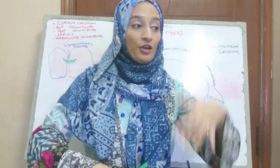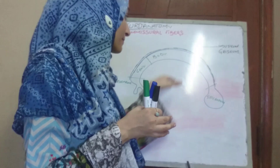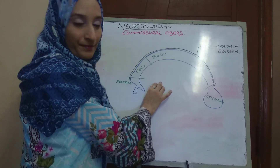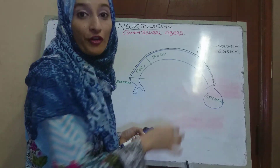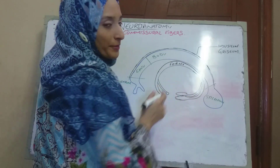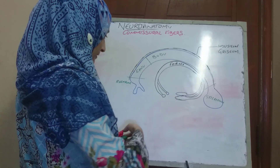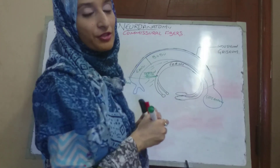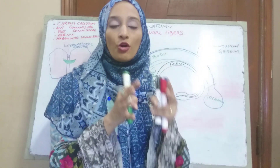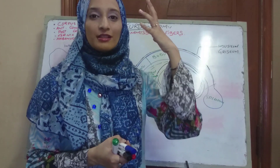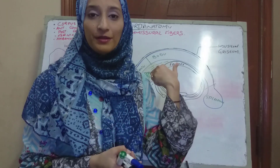Just beneath the corpus callosum, two important structures can be appreciated. The genu — especially its inferior aspect — is related to the septum pellucidum, a double membrane structure separating the anterior horns of the right and left lateral ventricles. Posteriorly, the body of the corpus callosum is related to the fornix. These are the superior, medial, and inferior relations of the corpus callosum.